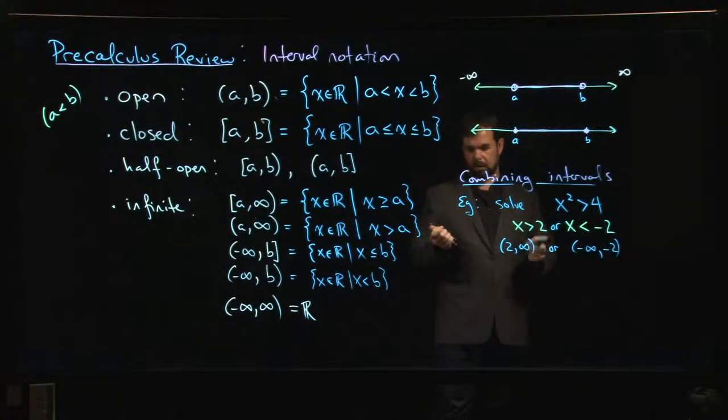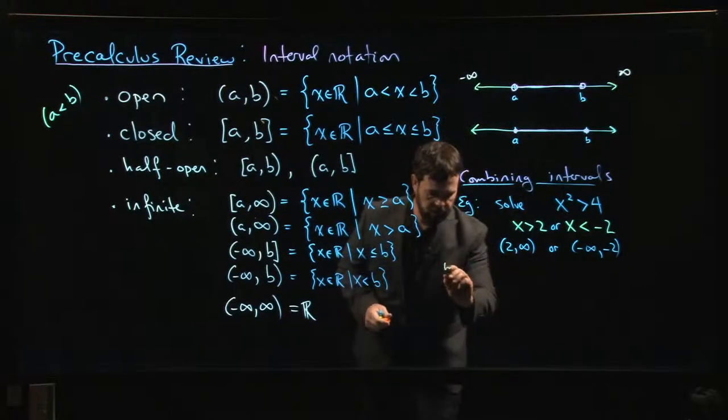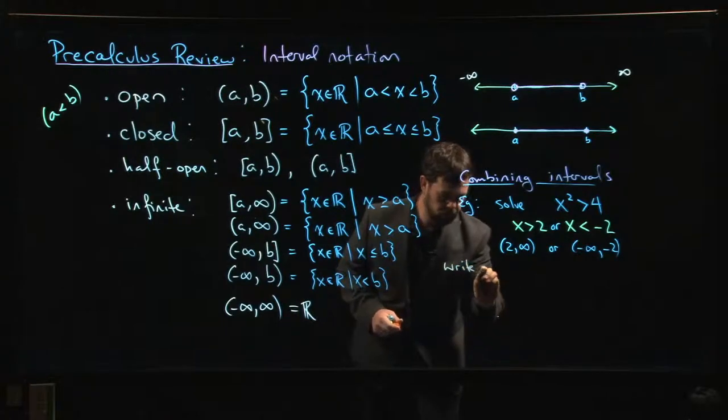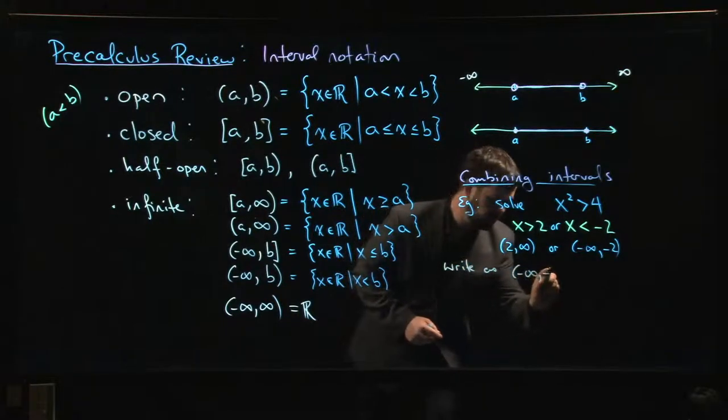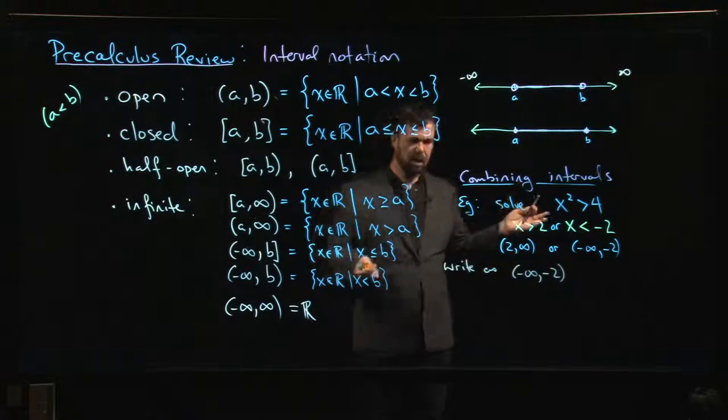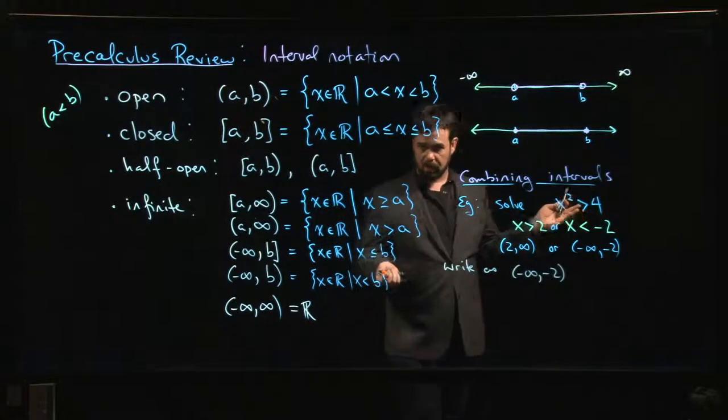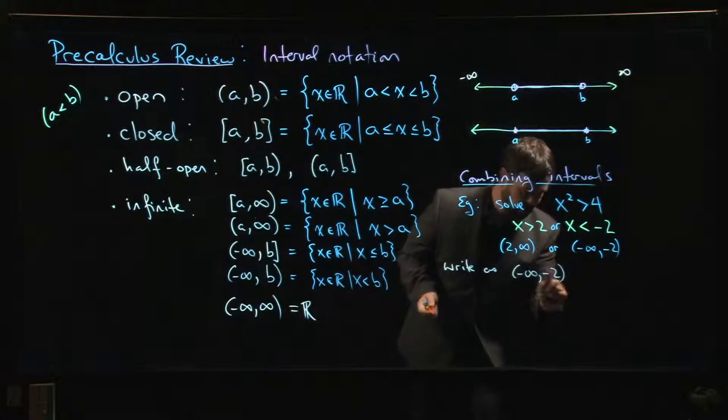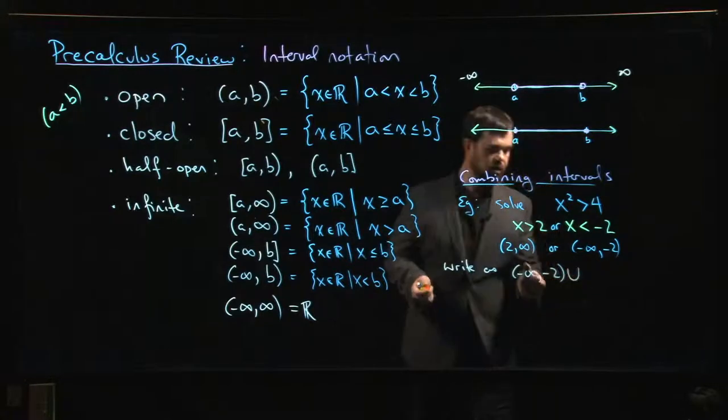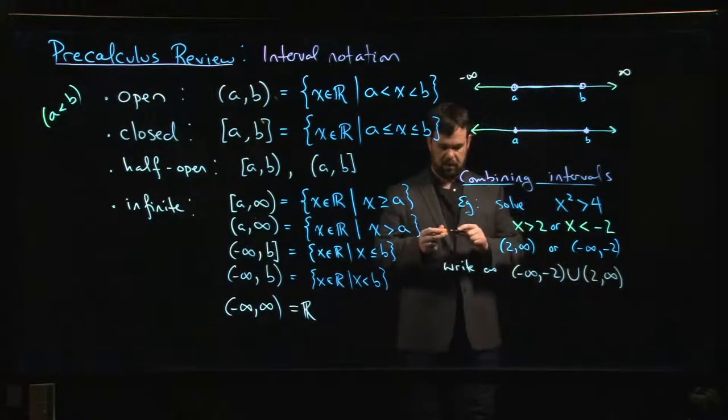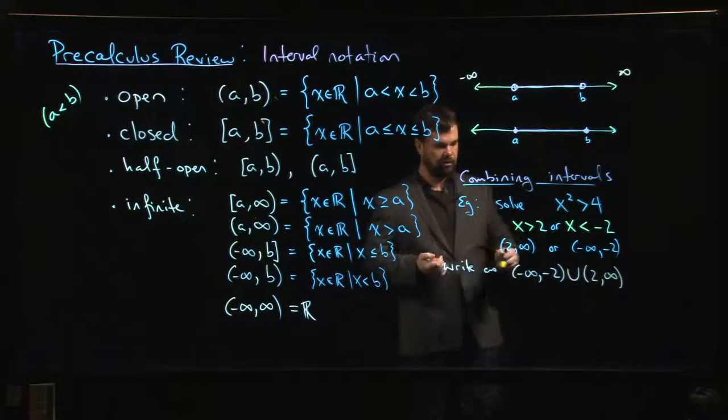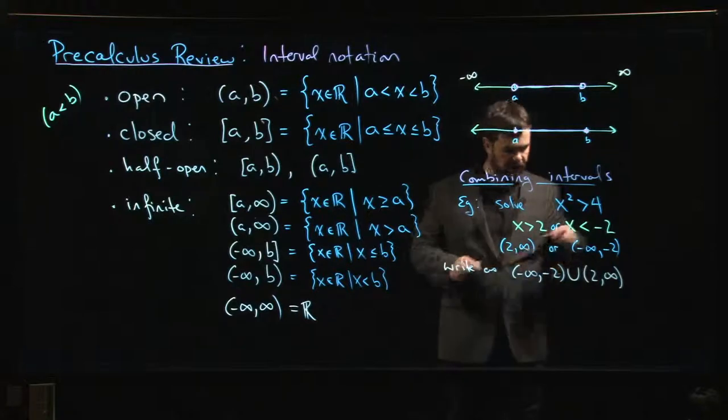One of the ways you might write this is using union notation. So we might say minus infinity to minus 2 - most people tend to write the smaller numbers first, although this doesn't actually matter, you can put it in either order - union 2 to infinity. This is a stylized U and it stands for union.